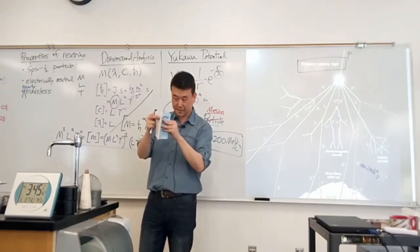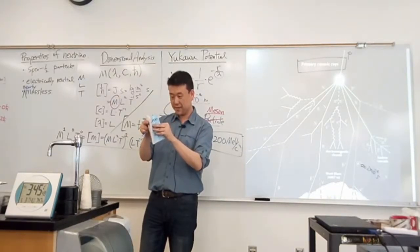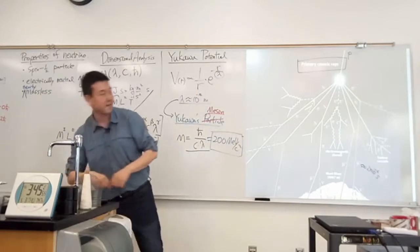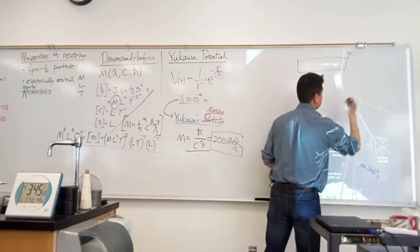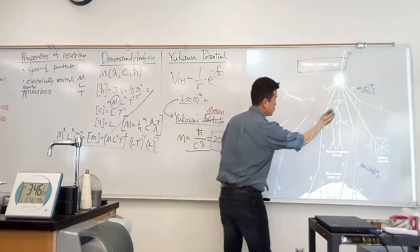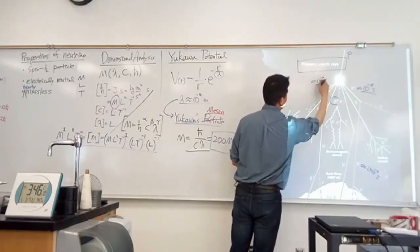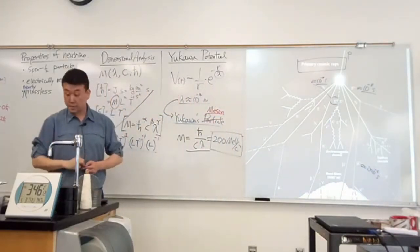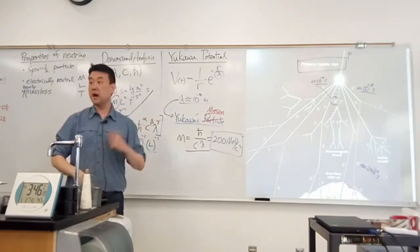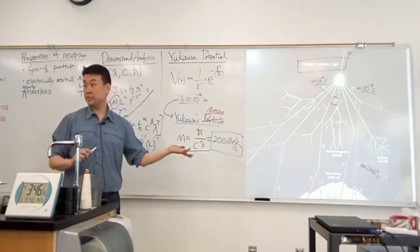Pi plus mean life is ten to minus eight seconds. And that's actually super long. So, this lives for about ten to minus eight seconds. And I say that's super long because these neutral pions, they actually decay more quickly. They live for about ten to minus ten seconds.